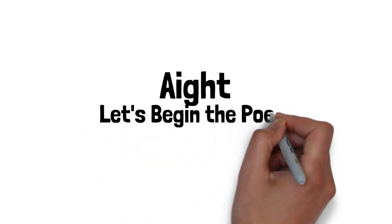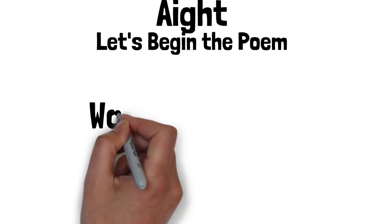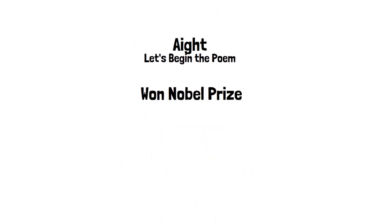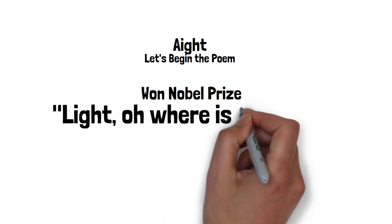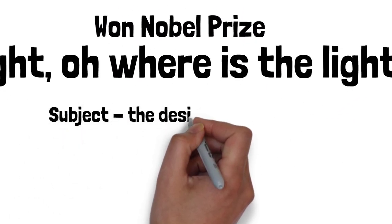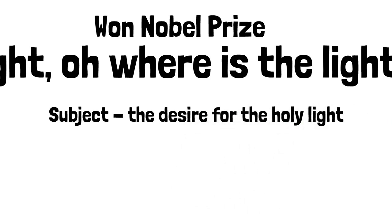Gitanjali, the collection of poems that won Rabindranath Tagore the Nobel Prize, contains the line Light, O Where is the Light, as verse 27. The desire for the holy light is the subject of this poem by Tagore.